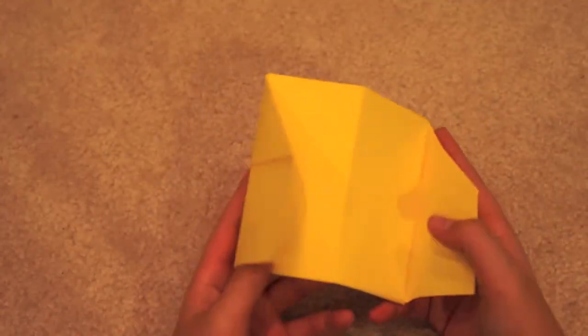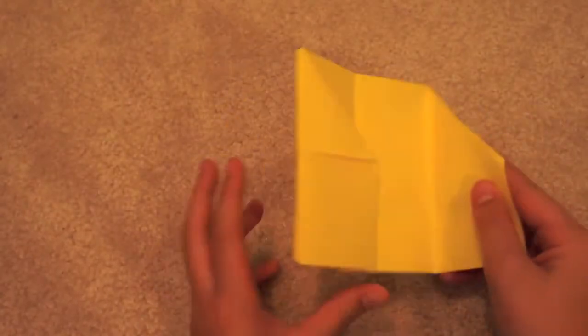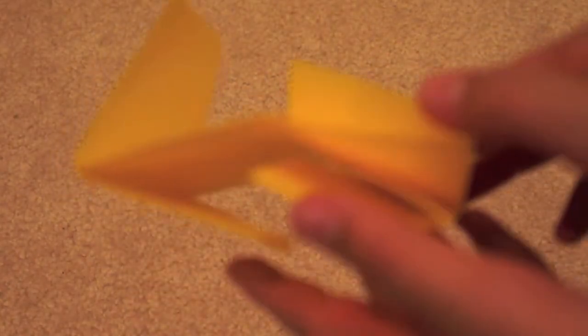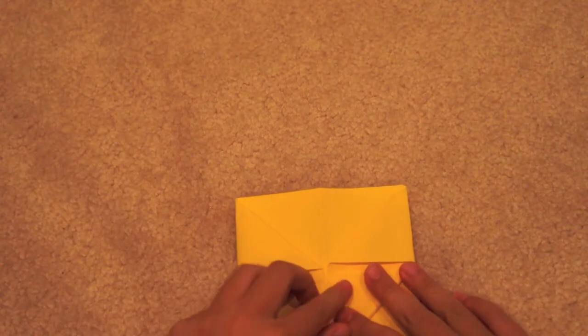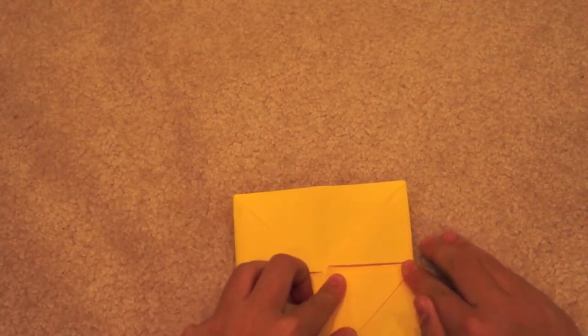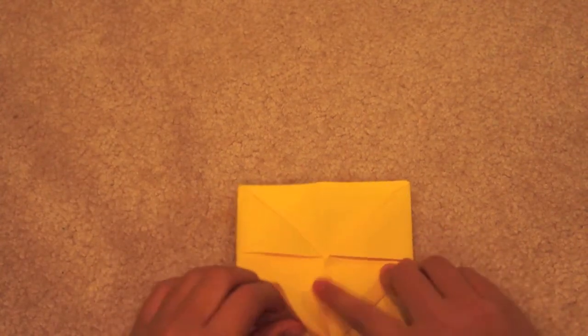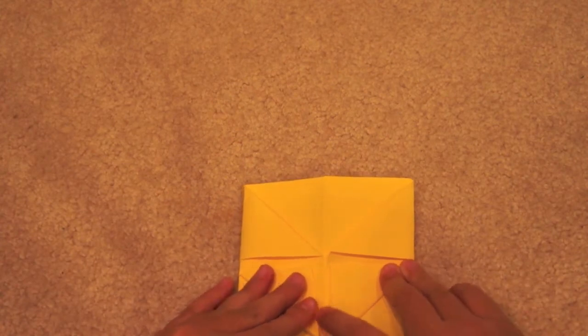You need to lift the corners up. See how there are two flaps? You need to take that side of the flap and fold it up towards the center like that, so that you get a pointed shape like a house shape.